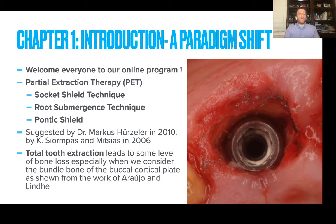Chapter 1 begins with what we consider a paradigm shift in implant dentistry. First we need to look at the definitions. Partial extraction therapy encompasses three things: the socket shield technique, root submergence technique, and the pontic shield technique. The socket shield technique is what we employ in placement of our implants. The root submergence technique involves burying the roots only. The pontic shield technique is a variation of the socket shield technique in which implants are not being placed.